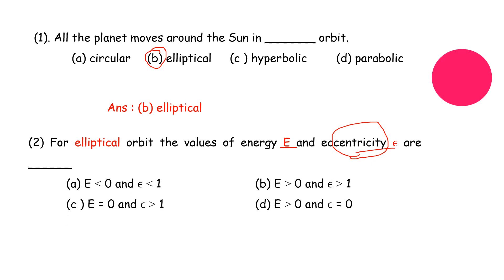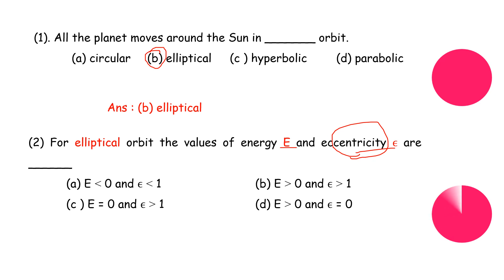The correct answer is option A: E less than zero and epsilon less than one is the correct answer for an elliptical orbit.